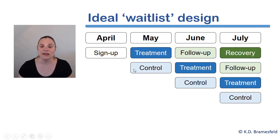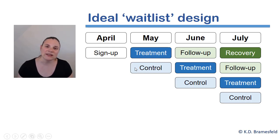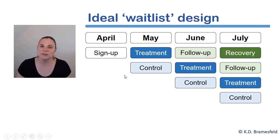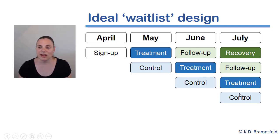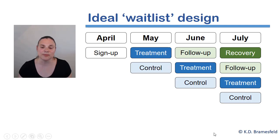For example, in May you would have those who are undergoing the treatment and those who have signed up to be part of the program but have not yet begun. Because there really shouldn't be too many systematic differences between those who start the program in April versus May, this would not be as ideal as randomly assigning people to conditions, but we shouldn't have too many reasons to believe that these two groups would be fundamentally different. In June, we would have the advantage of having a treatment and a control condition, as well as information about what the outcomes might be one month later. And in July, you can compare the control, the treatment, follow-up, and some kind of two-month longitudinal recovery. Waitlist designs can be an ideal design for conducting quasi-experimental research.